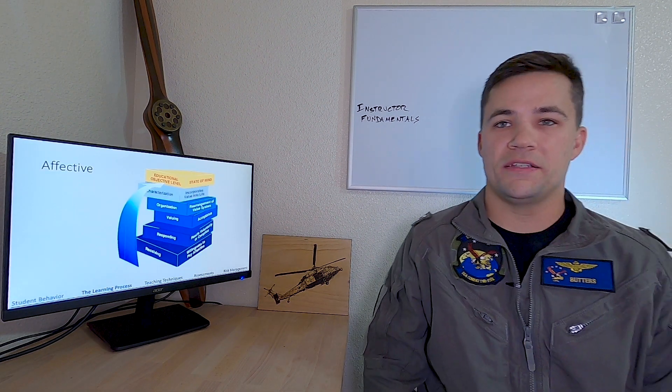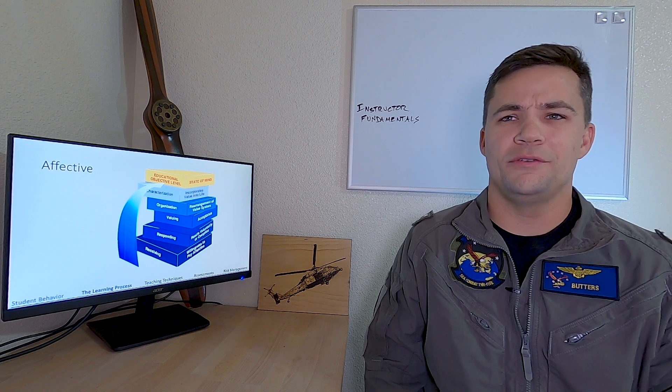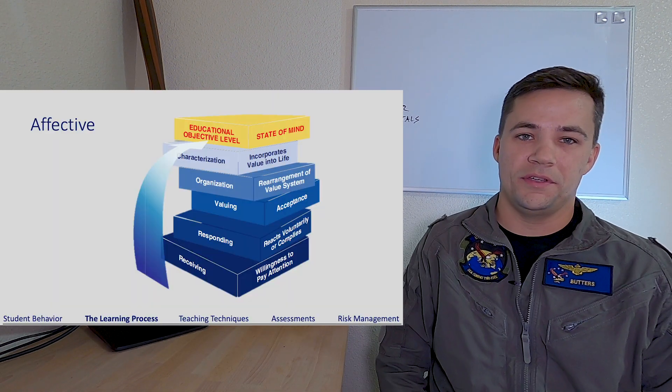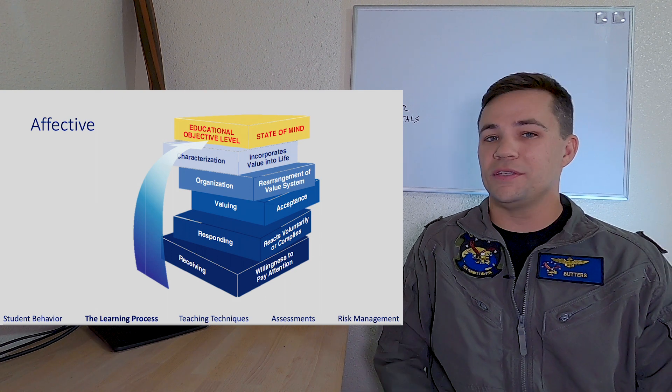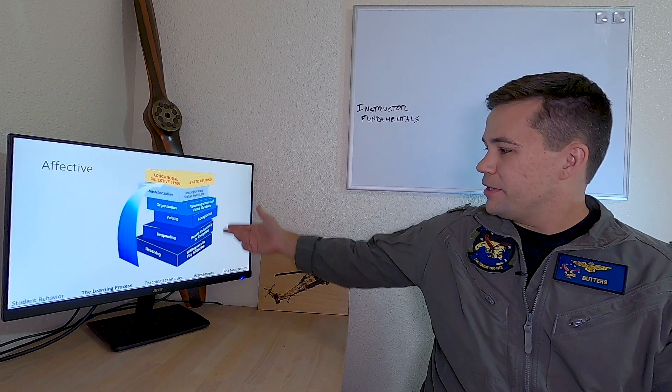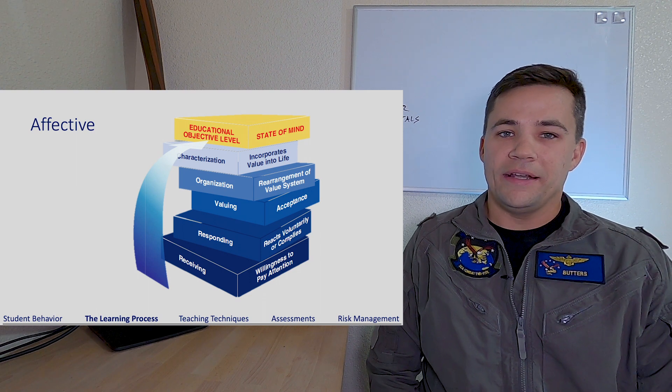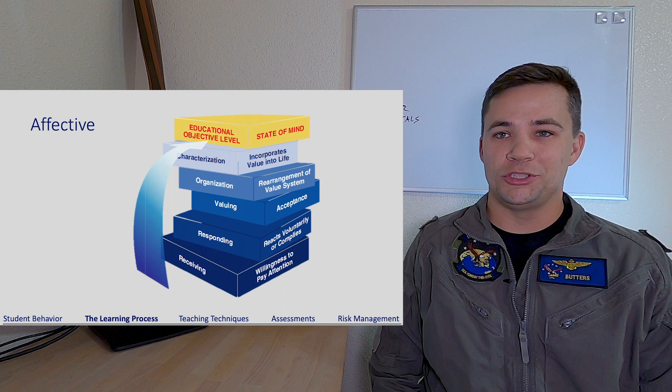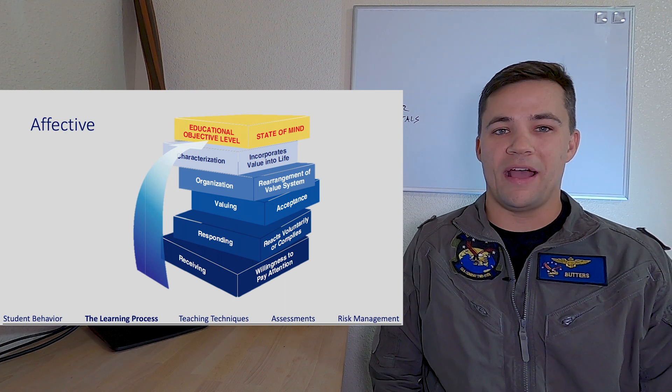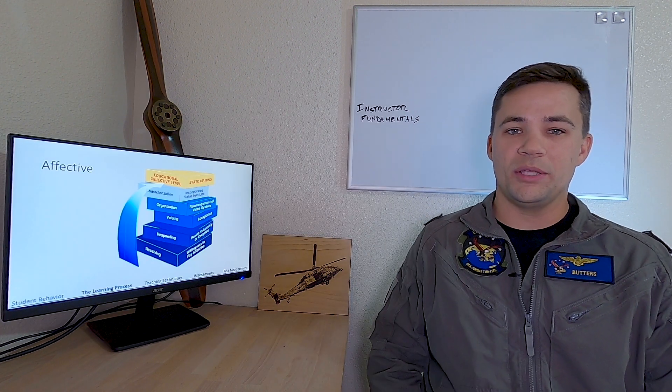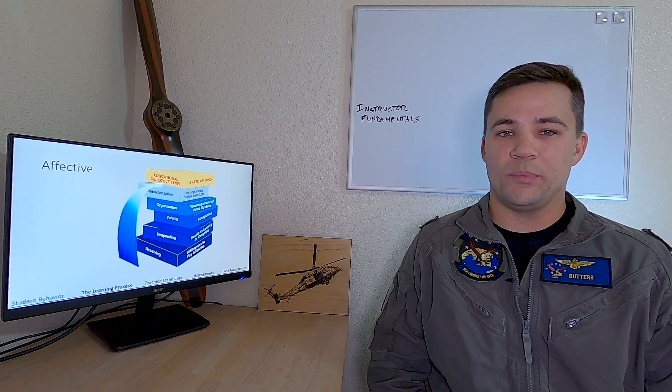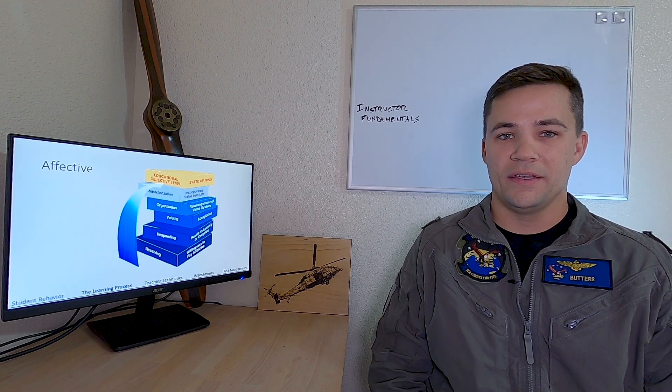After cognitive, we get into affective. So this is where we're talking about values, feelings, how you see something or feel about it. And so at the very bottom level, you can see this idea of willingness to pay attention. That's the baseline level. Is your student willing to listen to you, to take these ideas on board? And then we get up to reacts voluntarily or complies. But it isn't always necessarily the case if your student doesn't value what they're learning. If you haven't been able to convince them of the why or help them understand the reasoning, then they're not really making progress on this affective side domain of learning.